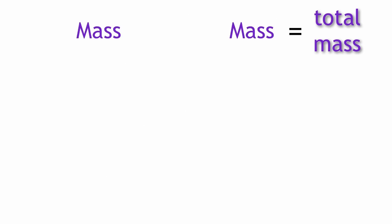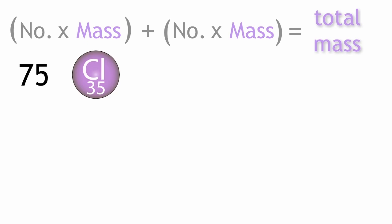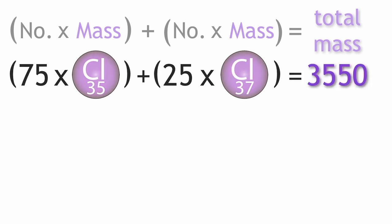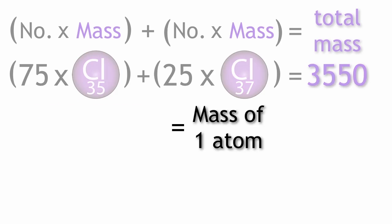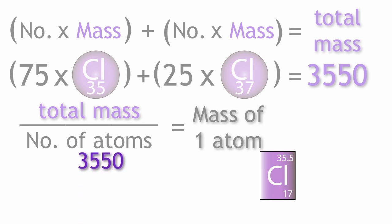We first find out the total mass of the sample by multiplying the mass of each atom by the number of atoms present for each isotope, then adding them together. For chlorine-35 there are 75 atoms, and for chlorine-37 there are 25 atoms. So the mass of 100 atoms would be 75 times 35 plus 25 times 37, which equals 3550. The mass of one atom would be 3550 divided by 100, giving 35.5.